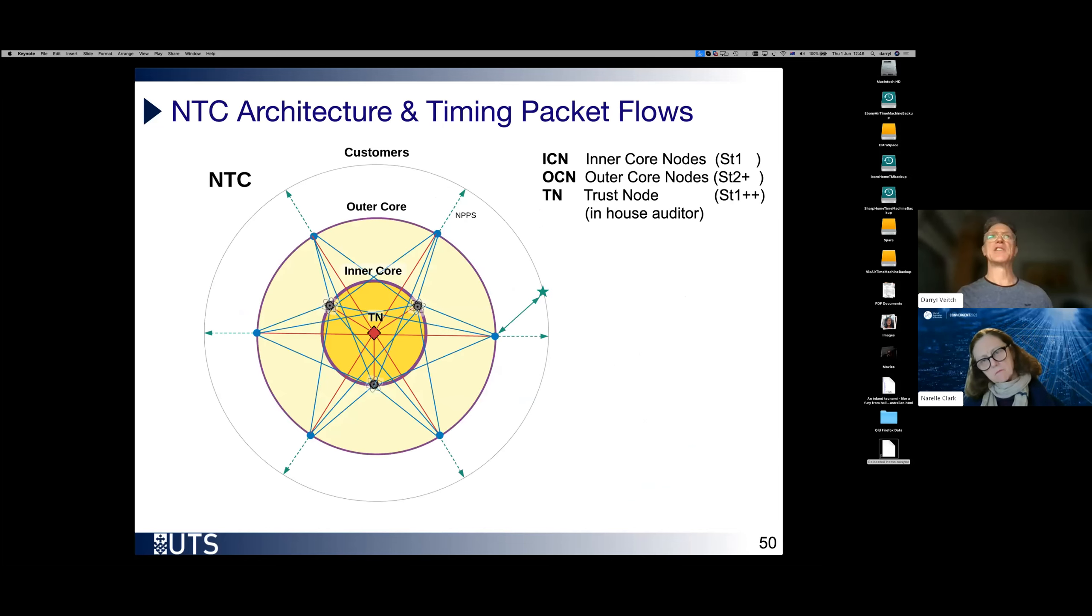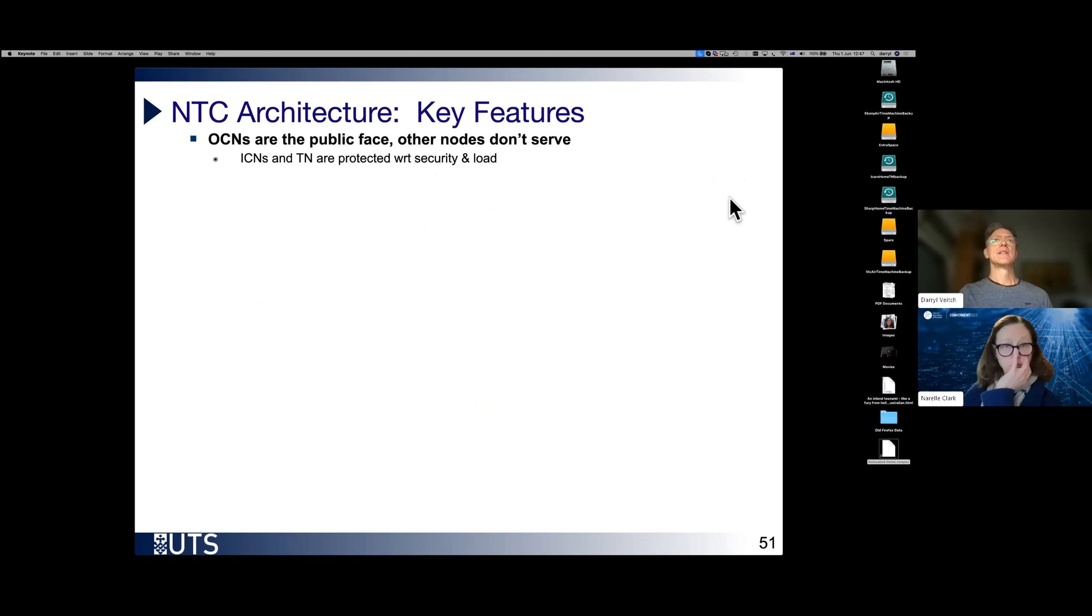This is the basic architecture of the NTC. We consist of some inner core nodes in the center here, which are strata ones. Outer core nodes, which synchronize to the inner core nodes. They serve customers. And a trust node in the middle, which plays the role of an in-house auditor. Now the outer core nodes are stratum twos by definition, but they're not ordinary stratum twos. That's why I call them two plus. And the trust node has its own reference timekeeping with atomic clocking. It is at one level, just another stratum one, but in fact, it does much more than that.